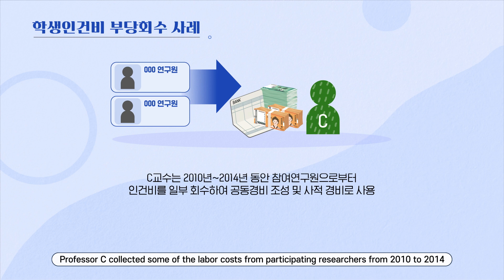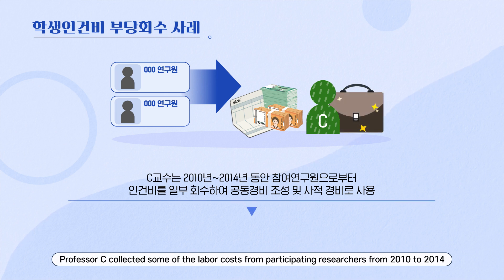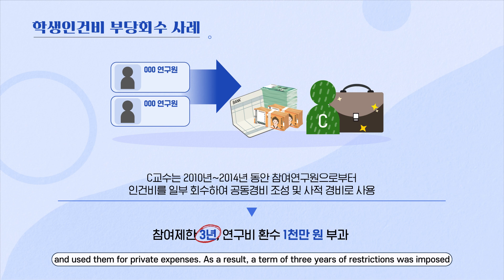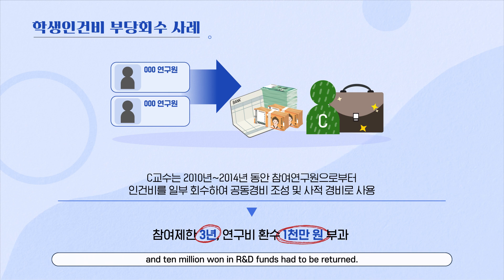Professor C collected some of the labor costs from participating researchers from 2010 to 2014, and used them for private expenses. As a result, a term of three years of restriction was imposed, and 10 million won in R&D funds had to be returned.